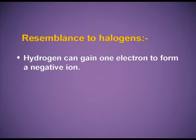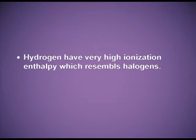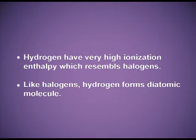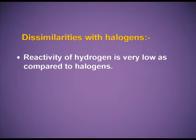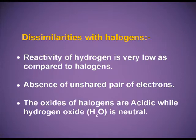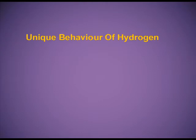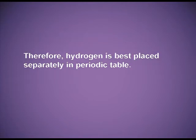Resemblance to halogens: hydrogen can gain one electron to form a negative ion. Hydrogen is short by one electron from the corresponding noble gas configuration, just like halogens. Hydrogen has a high ionization enthalpy comparable to halogens. Like halogens, hydrogen forms a diatomic molecule. Dissimilarities with halogens: reactivity of hydrogen is very low compared to halogens, there is an absence of unshared pairs of electrons, and the oxides of halogens are acidic while hydrogen oxide (water) is neutral. Unique behavior: hydrogen resembles both alkali metals and halogens, making it difficult to assign any definite position — so it is best placed separately.